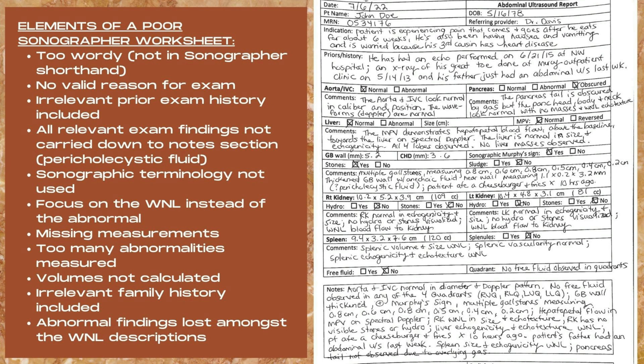Now it's time to look at what not to do on a patient worksheet. Let's look at the indication. This one says: the patient is experiencing pain that comes and goes after he eats for about six weeks; he's also been having nausea and vomiting and is worried because his third cousin has heart disease. Number one, this is way too wordy and not using sonographer shorthand. 'Right upper quadrant intermittent pain times six weeks' and 'N/V' would be a much better way of conveying these findings. Also, the patient being worried about his third cousin having heart disease is not relevant information.